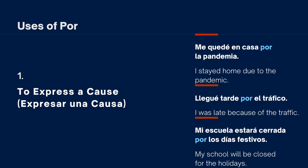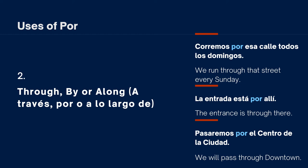The second use of por is through, by, or along — a través de, por, o a lo largo de. Examples: 'Corremos por esa calle todos los domingos' (We run through that street every Sunday); 'La entrada está por ahí' (The entrance is through there); 'Pasaremos por el centro de la ciudad' (We will pass through downtown). Basically, just passing through, by, or along something.